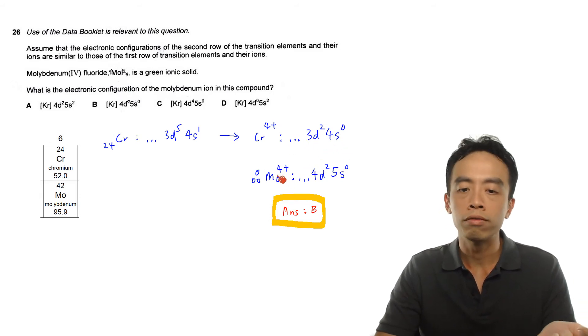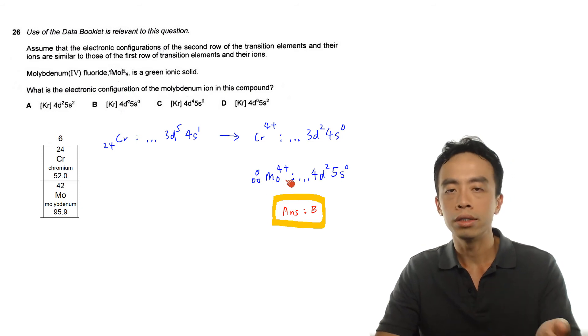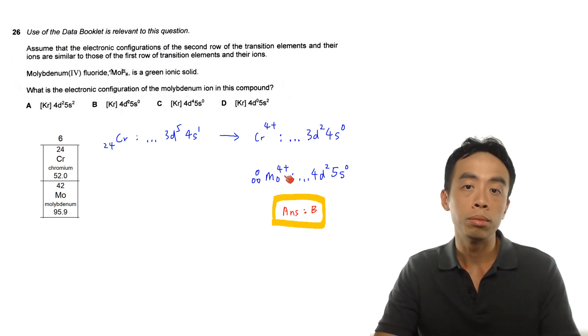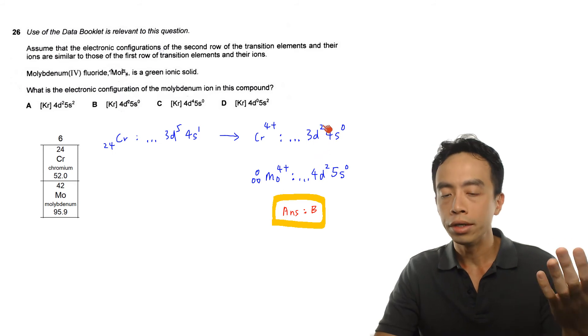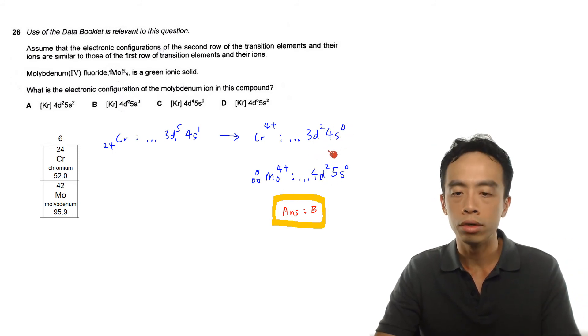So what we will expect for Mo4+ should be essentially the same. But since it is further down the row, so chromium is the first row, this will be 3d2 4s0. Mo4+, since it is in the next row, the principal quantum number will increase. So instead of 3d2, this will become 4d2. Instead of 4s0,